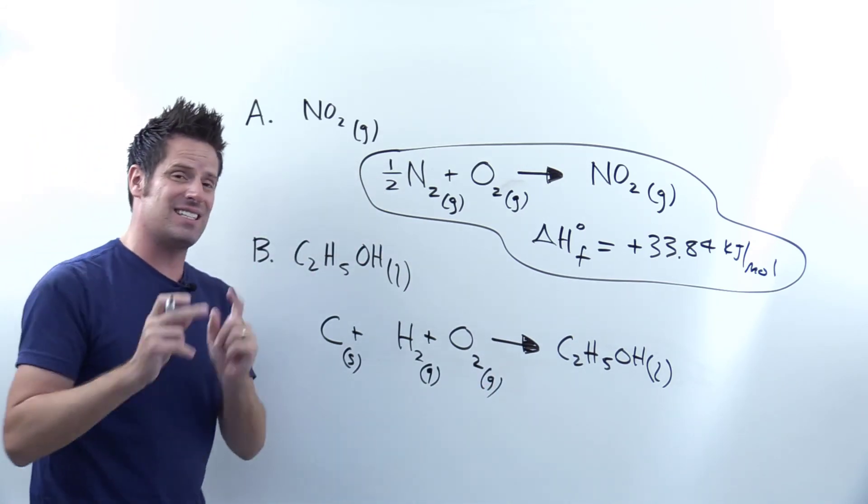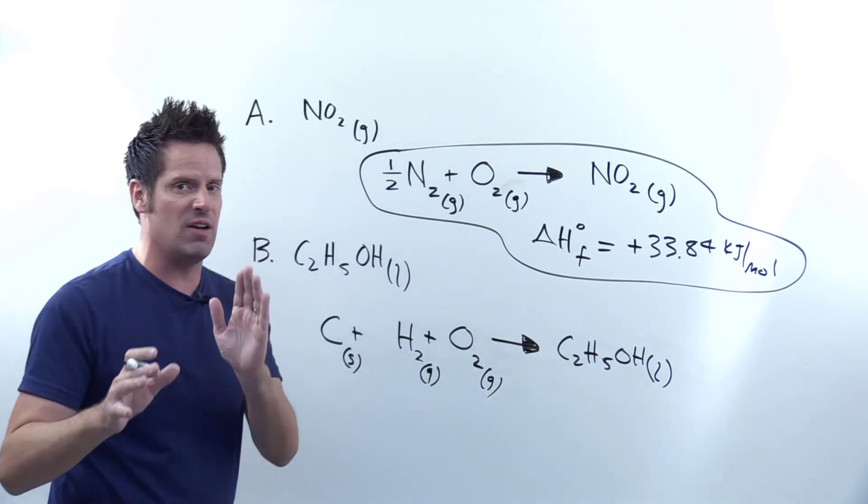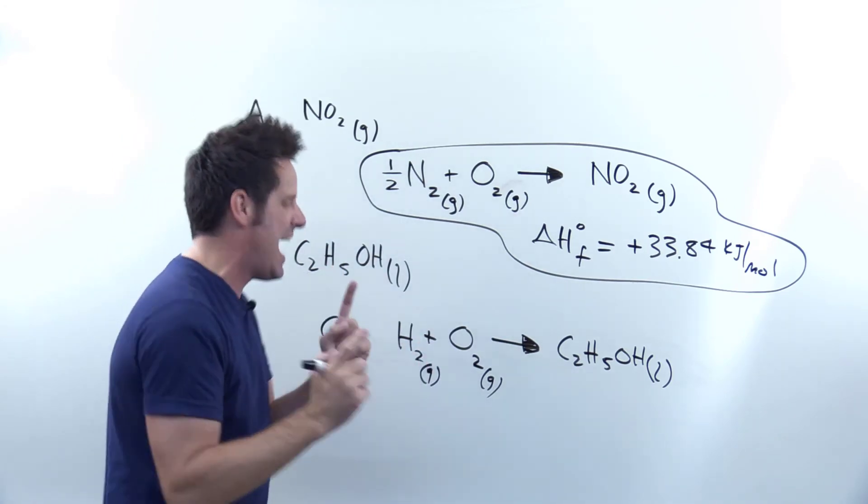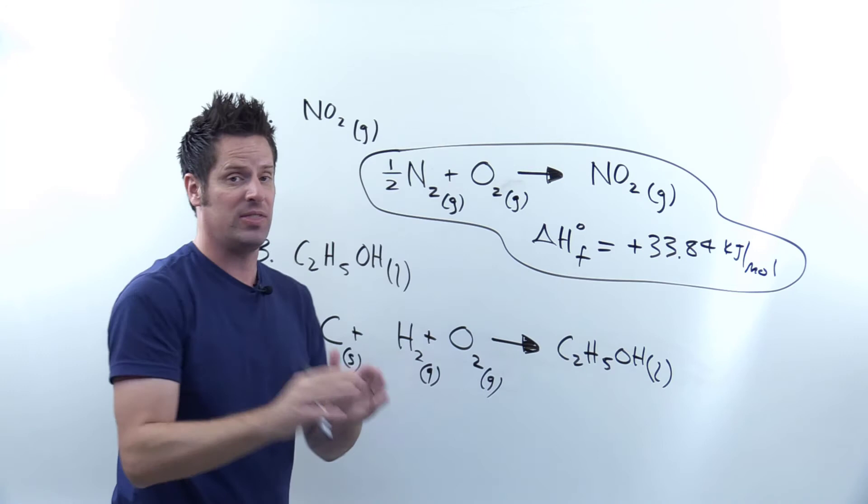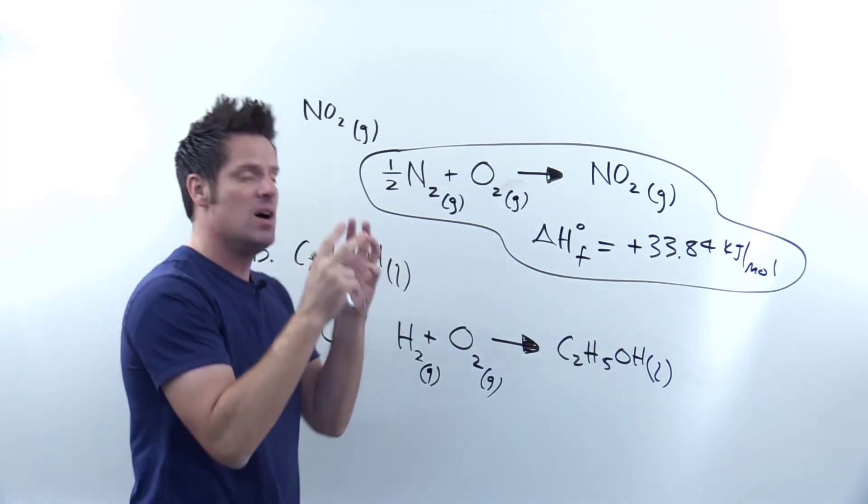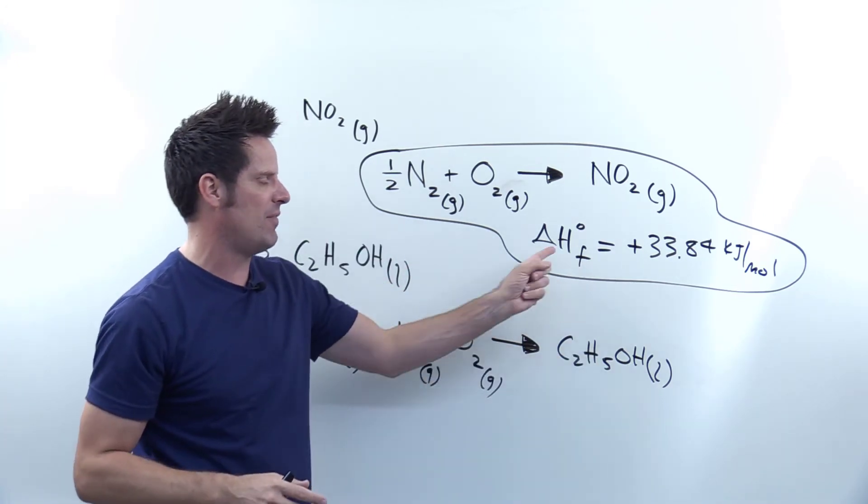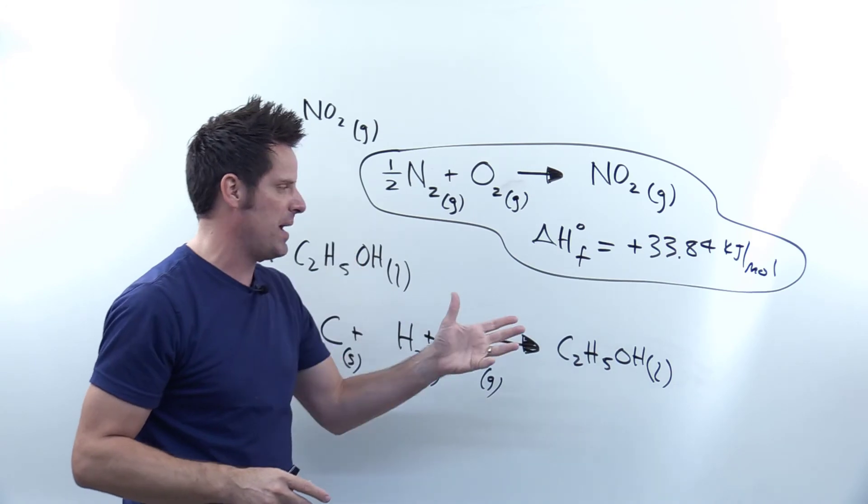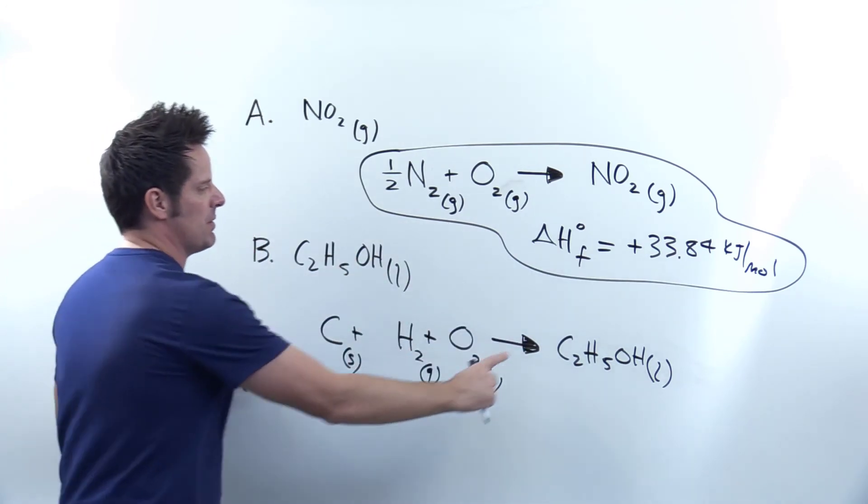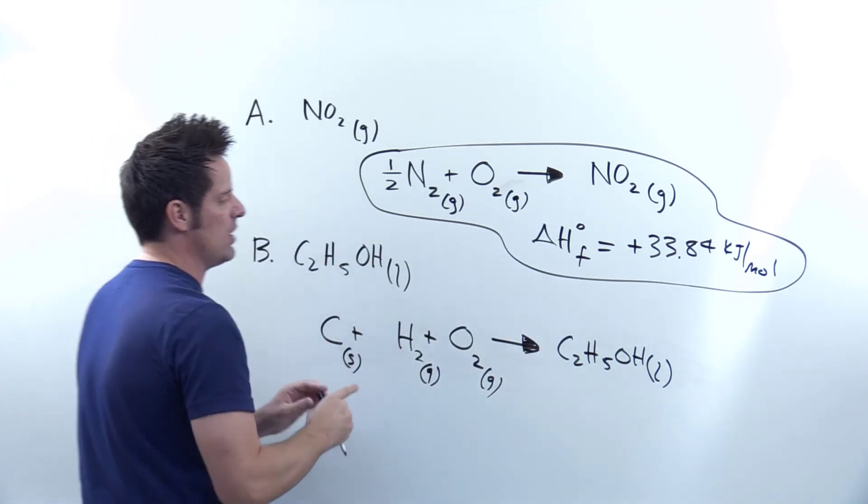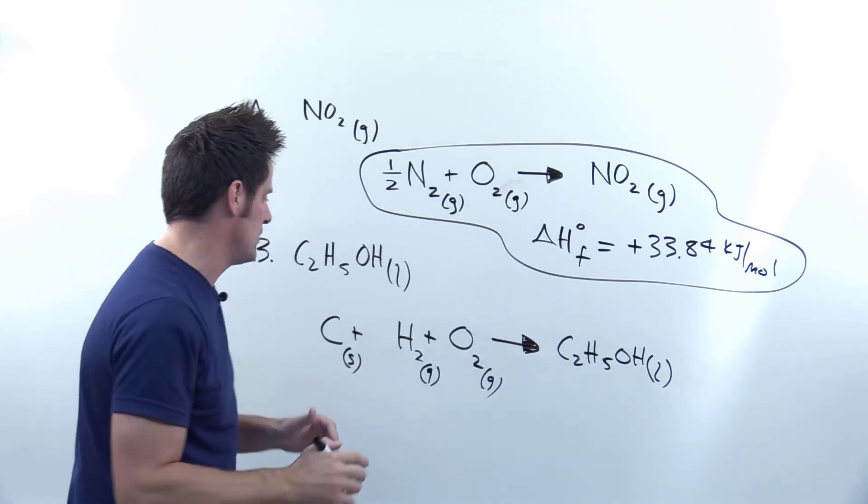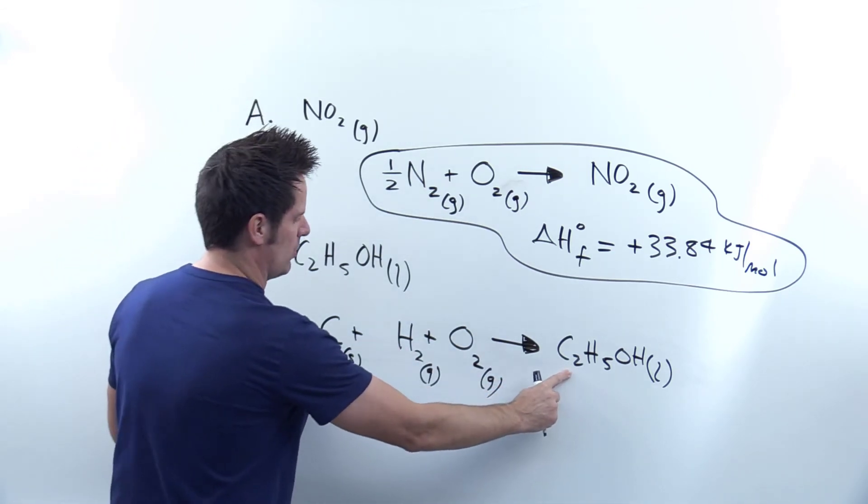The next step is balance the chemical equation adding coefficients. Now again, for thermochemical equations of formation, we have to keep one coefficient in front of our product. That's the rule. It's one mole form of our product. Otherwise, we'd have to change the delta H value formation from our table. So I'm going to keep a one here and add coefficients over here, which sometimes requires us to add fractions.